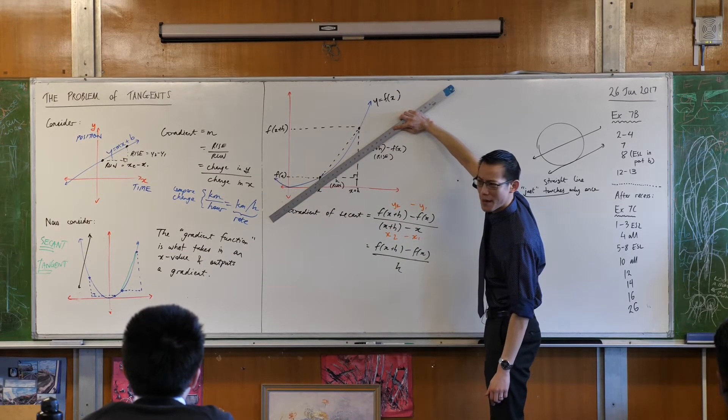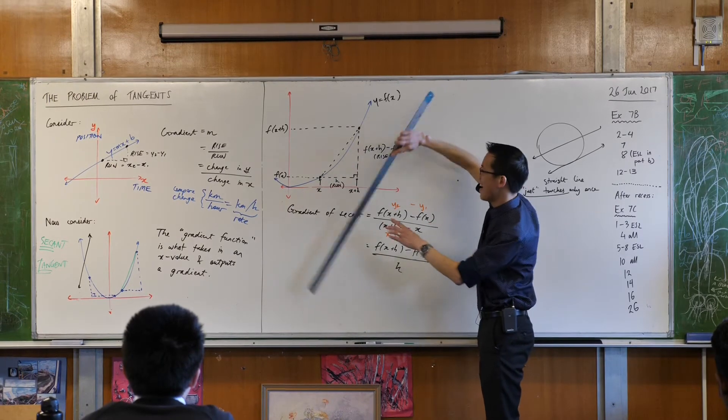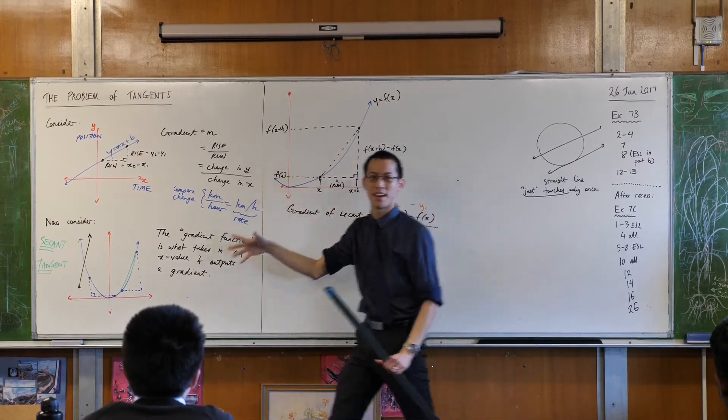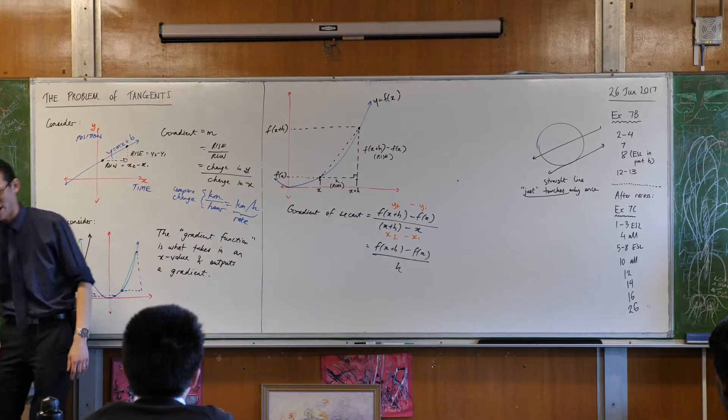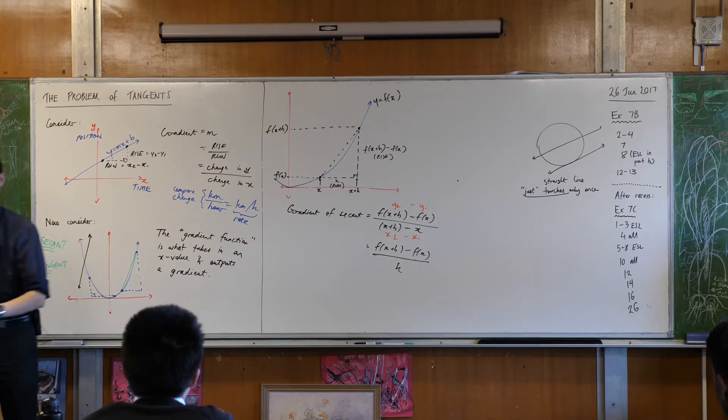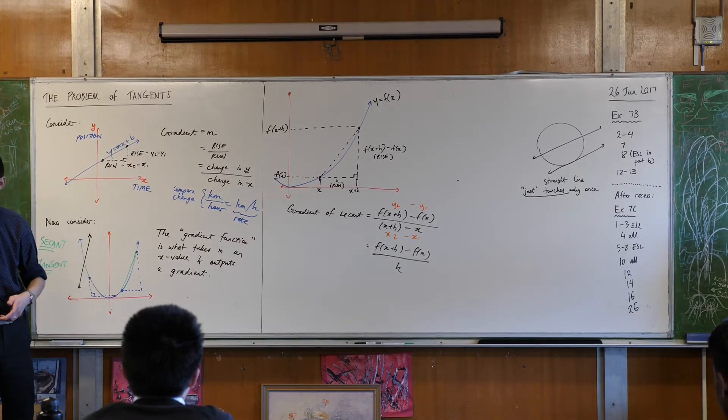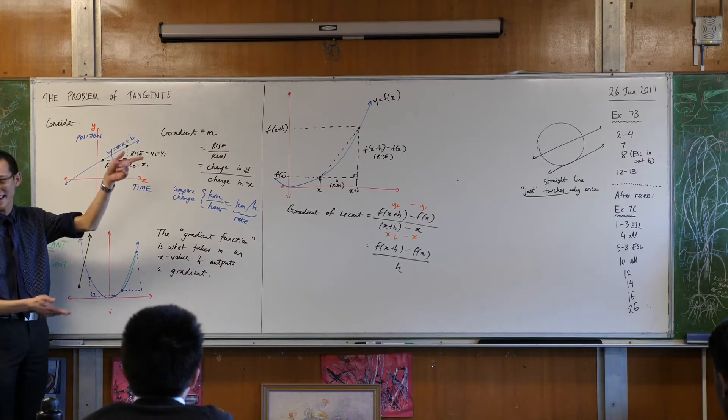If only I had a piece of mathematics that would take this triangle and bring these points so close together that they were more or less the same point. That'd be handy, wouldn't it? What would you call a piece of mathematics that could do that? Limits. Limits. Limits. That's a funny name. How's this going to help us? Okay.